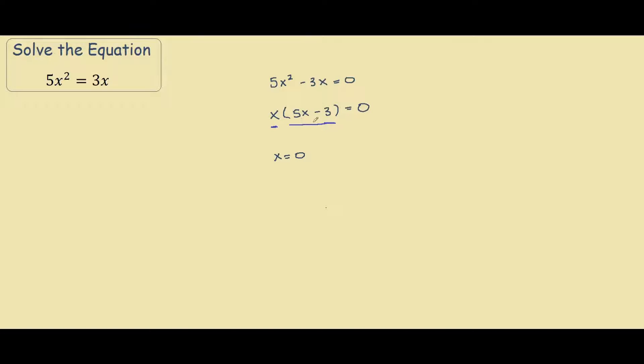So our other part, we have 5x minus 3. And we also want this to equal 0 because 0 times any x would still give us an answer of 0. So we solve this one, we have 5x equals 3 by adding 3 to both sides, and then x equals 3 fifths.